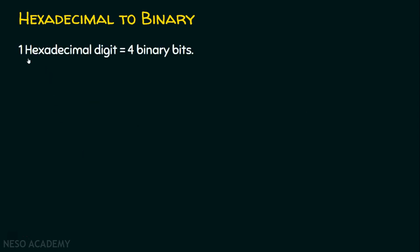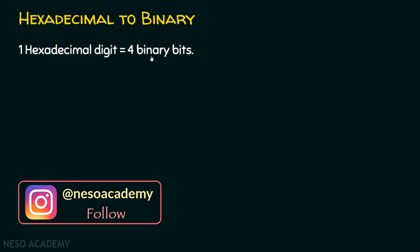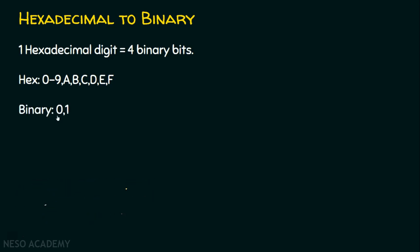We know one hexadecimal digit is equal to four binary bits because hexadecimal takes values between 0 and 9, A, B, C, D, E and F. There are 16 possible values in a hexadecimal digit, but binary takes only two values, 0 and 1. In order to convert hexadecimal to binary, we need to know the decimal equivalent of hexadecimal.